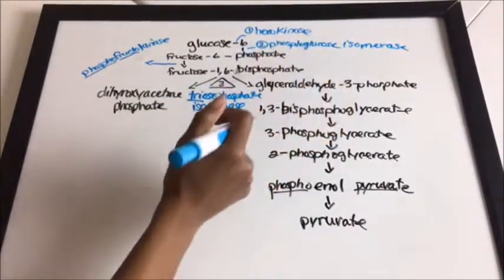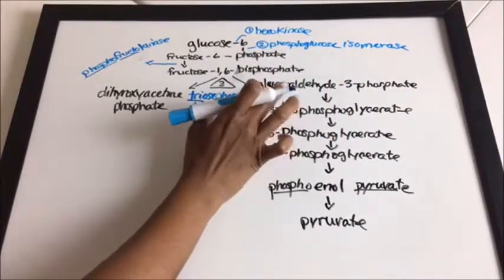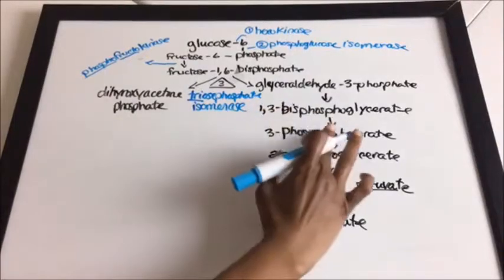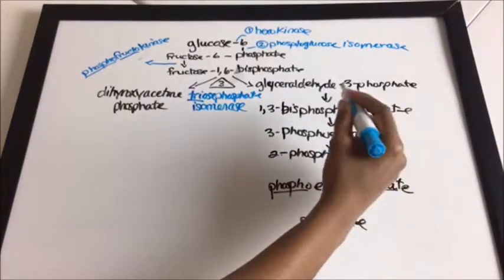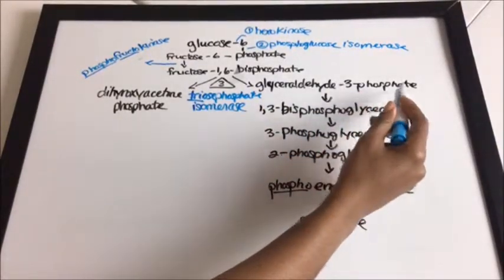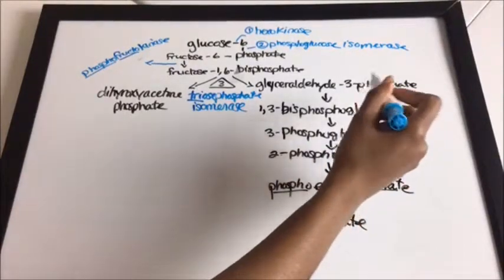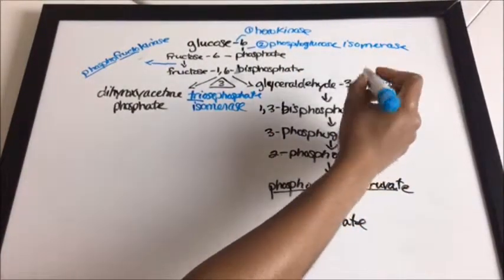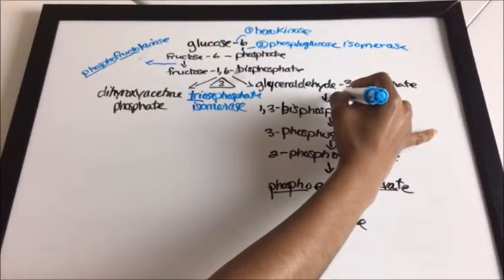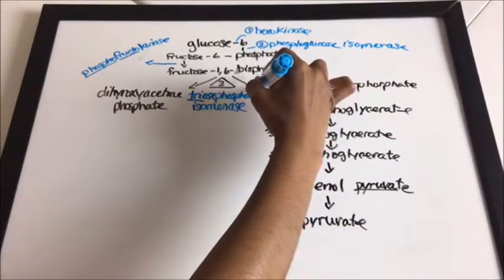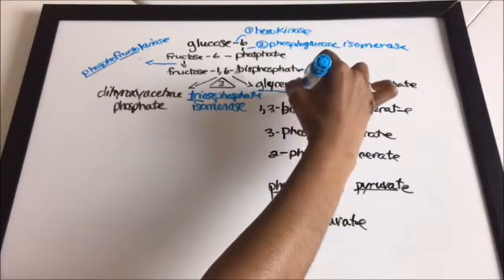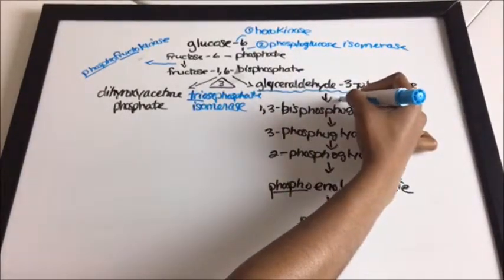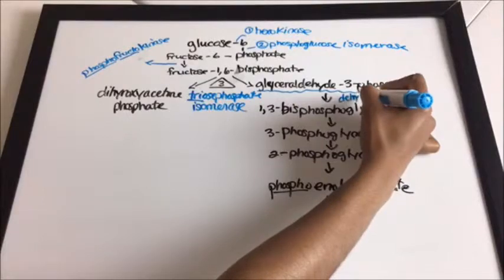Between glyceraldehyde-3-phosphate and 1,3-bisphosphoglycerate, the enzyme is glyceraldehyde-3-phosphate dehydrogenase. All you have to do is bring down the name and add 'dehydrogenase' — you don't have to remember much.